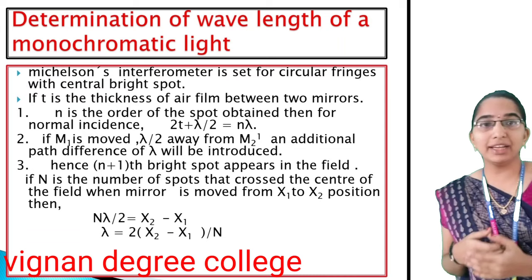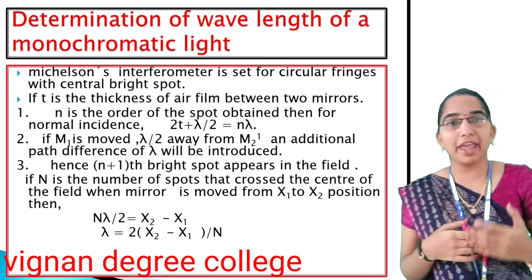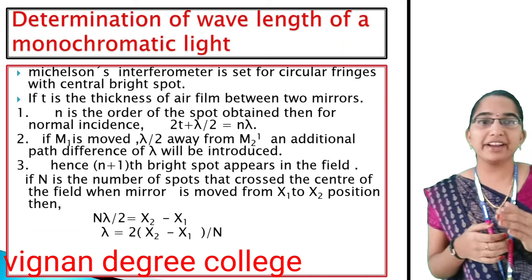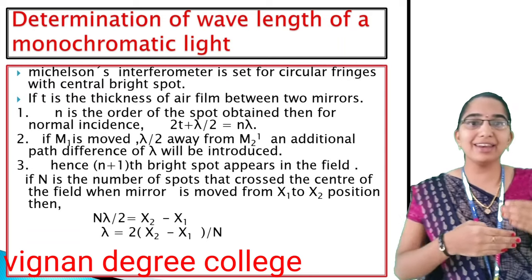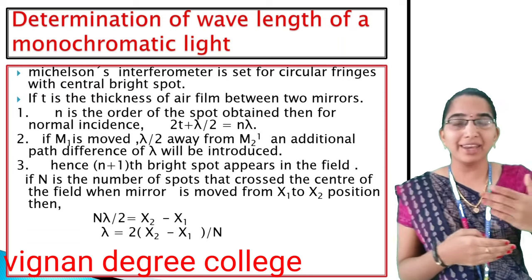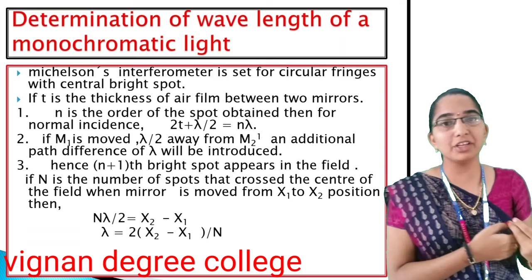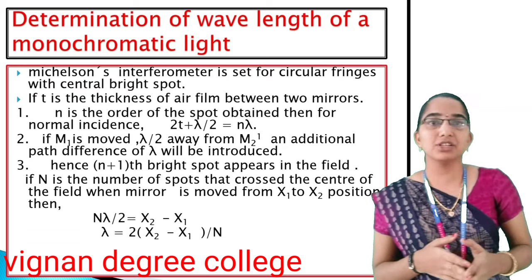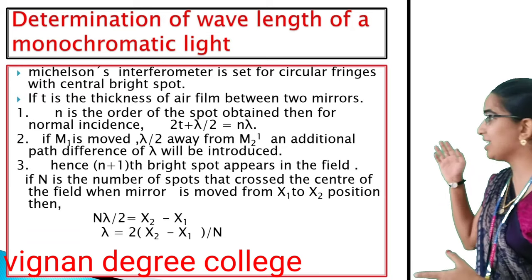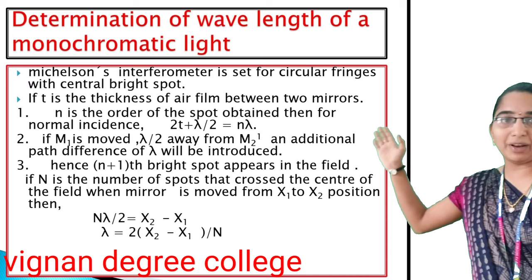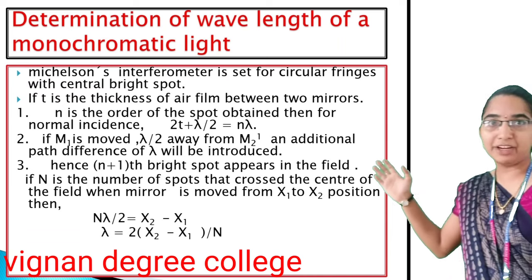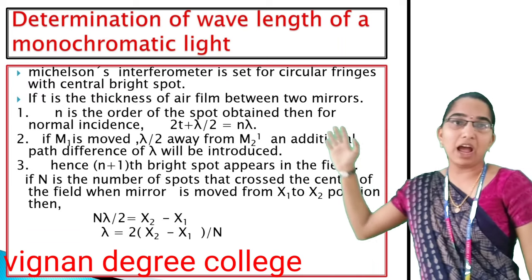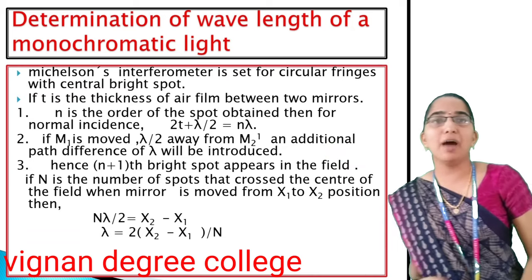If T is the thickness of the air film between the two mirrors, and N is the order of the spot obtained at normal incidence, then the formula is given by: 2T + λ/2 = Nλ.